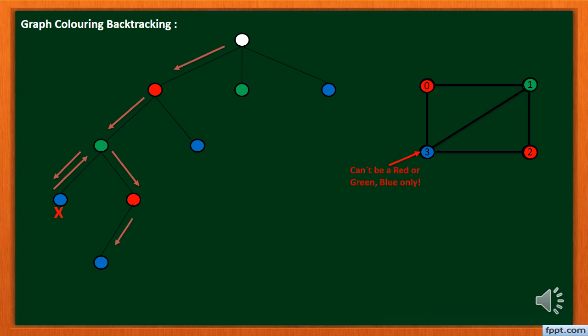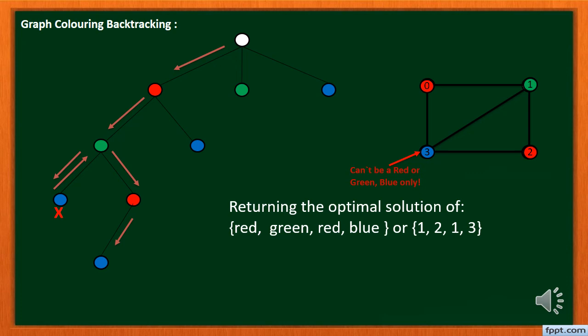After completing all nodes we have got the optimal color solution with three colors and the color sequence is red, green, red, blue.